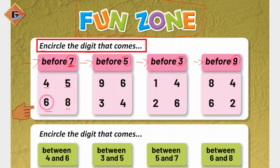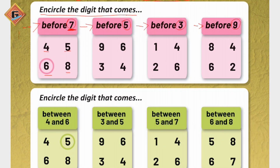One is done for you, as you can see. For number seven, we have to count first up to seven and see what comes before it. Let's write the counting to make it easy: one, two, three, four, five, six, seven. So before seven, we have number six — six is done for you, it is already circled.